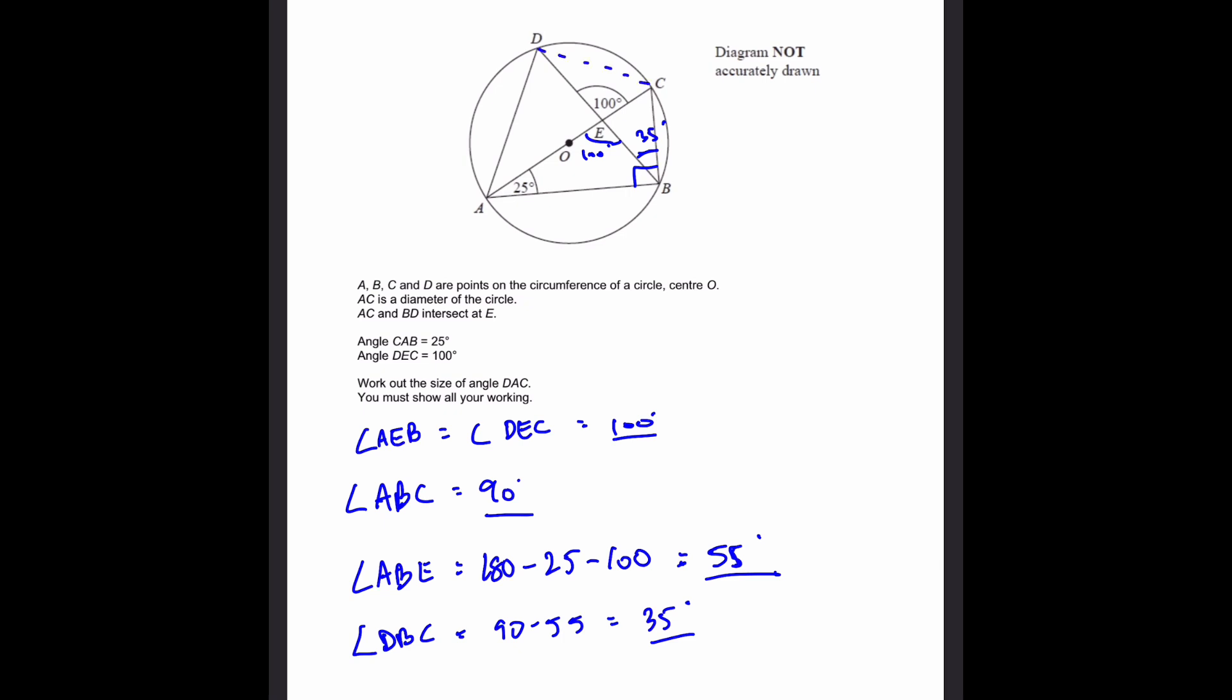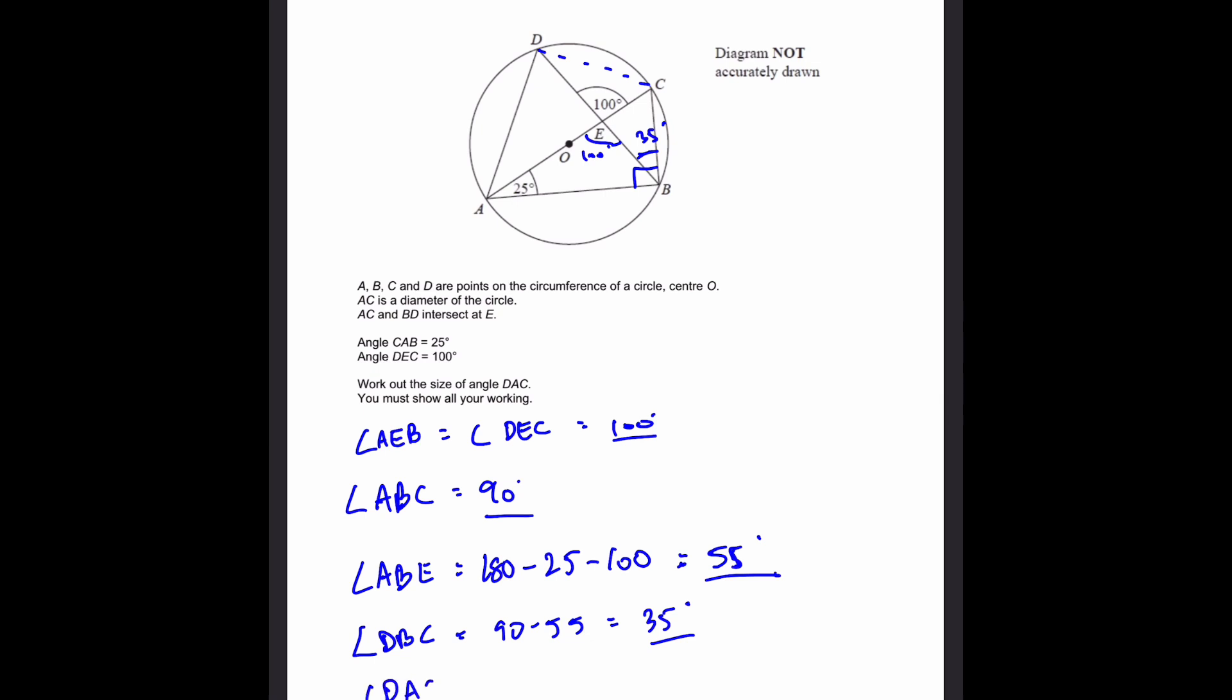We can draw a line to represent the chord DC. This angle and this angle are equal because they're subtended by the same chord. Angle DAC equals angle DBC, which equals 35 degrees, because they're subtended by the same chord in the same segment.